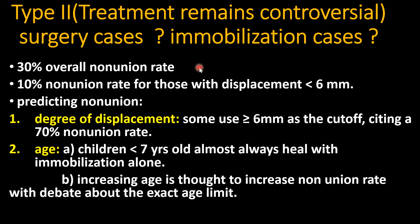There is a 30 percent overall non-union rate in Type 2 fractures. The non-union rate is 10 percent for those with displacement less than 6 millimeters. For displacement more than 6 millimeters, the non-union rate reaches 70 percent. Age less than 7 years almost always heals with immobilization alone, while increasing age is thought to increase non-union rate, with debate about the exact age cutoff.